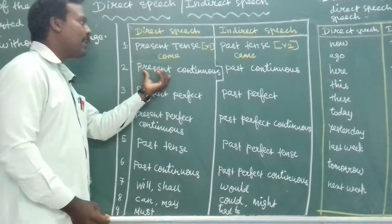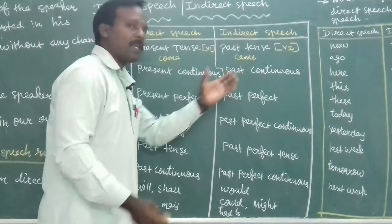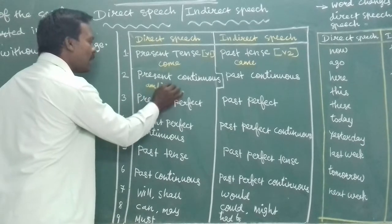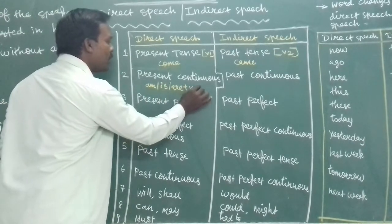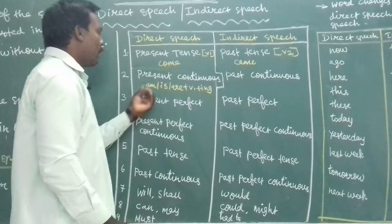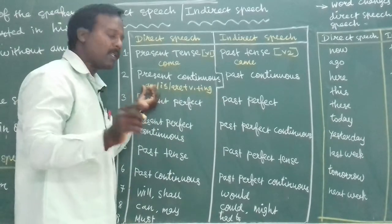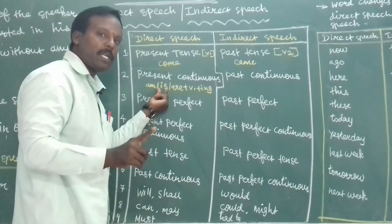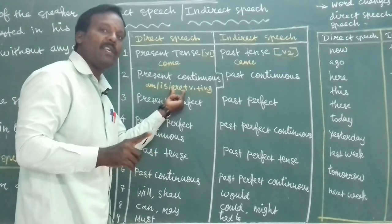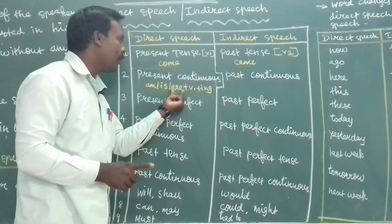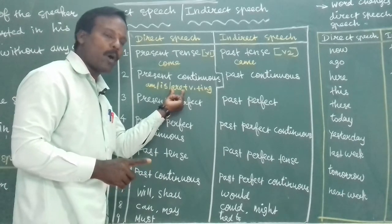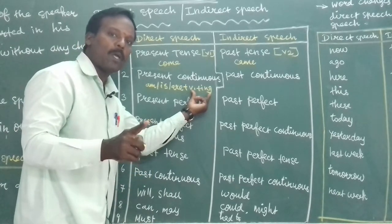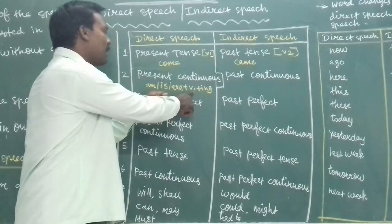Second tense change: present continuous tense changes to past continuous tense. Present continuous tense is formed with am, is, or are plus V1+ing. For example: I am writing, we are writing, they are writing, you are writing. The V1+ing is the present participle — for example, write becomes writing, go becomes going. That is present continuous tense.